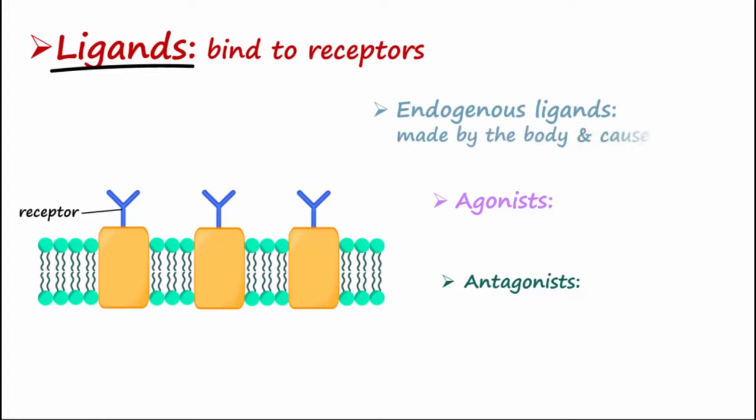Endogenous ligands are made by the body and bind to the receptor, which then causes an effect or action.